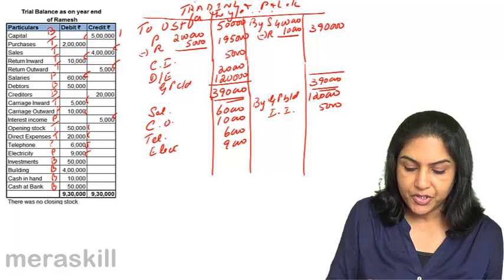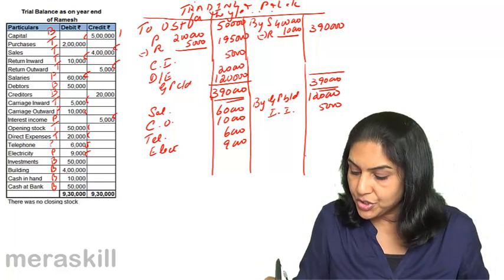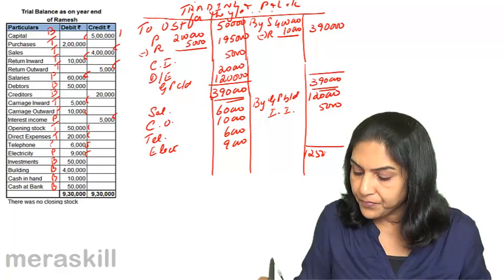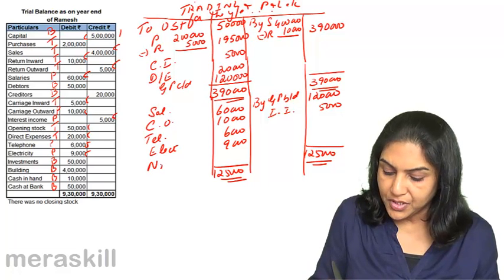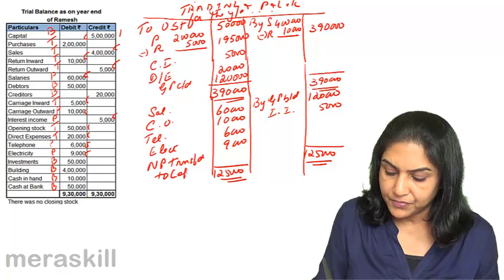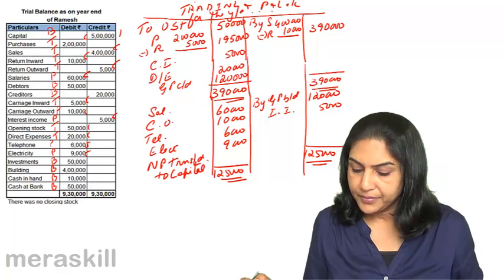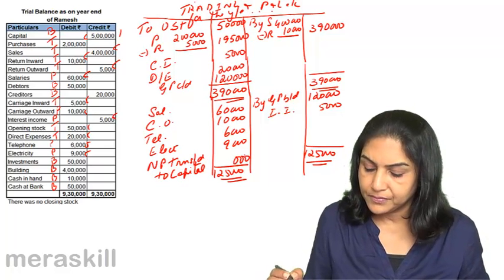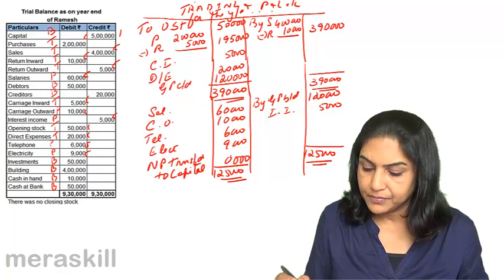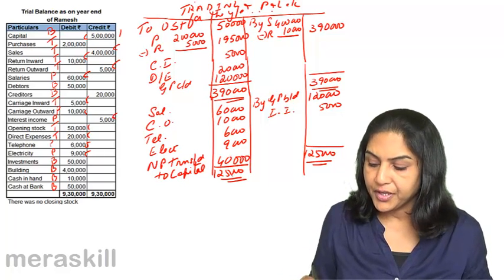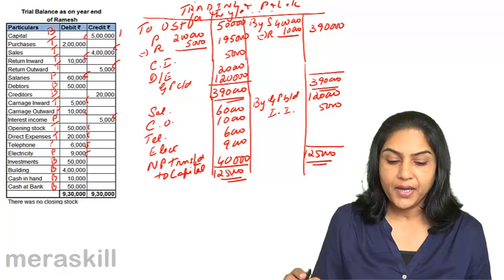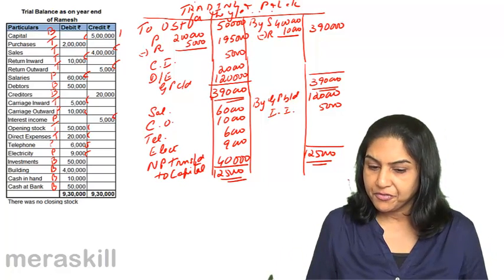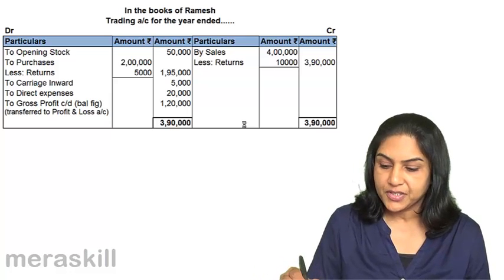Trading account items are taken. Profit and loss items — telephone and the rest — are done. So we are done. The net profit transferred to capital account is 40,000. This is how the trading and profit and loss account would be prepared. Let us now take a look at the fair presentation of the same.